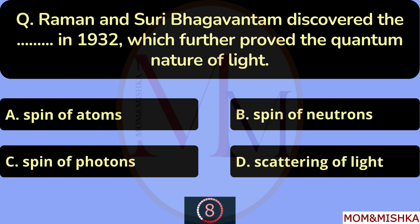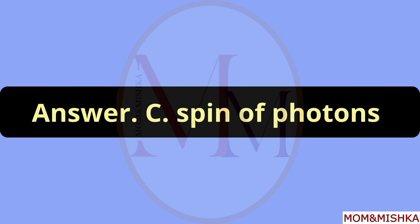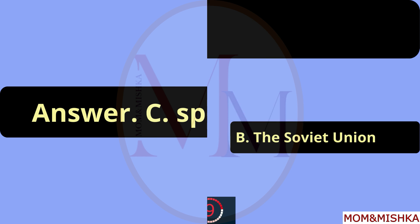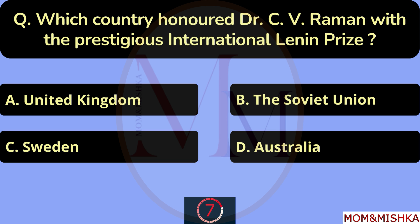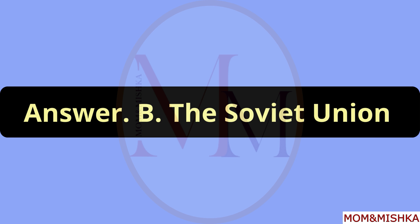Raman and Suri Bhagwantam discovered the quantum spin of photons in 1932, which further proved the quantum nature of light. Option C. Which country honored Dr. C.V. Raman with the prestigious International Lenin Prize? The Soviet Union. Option B.